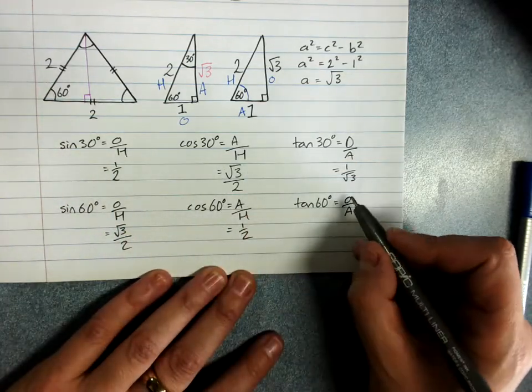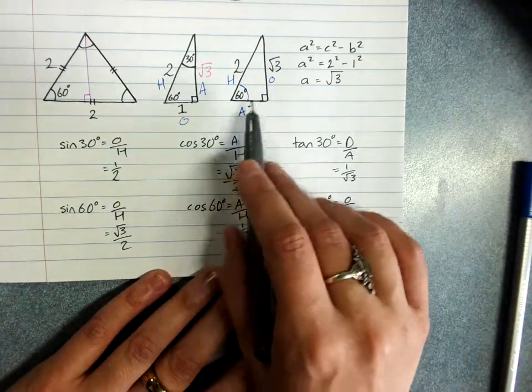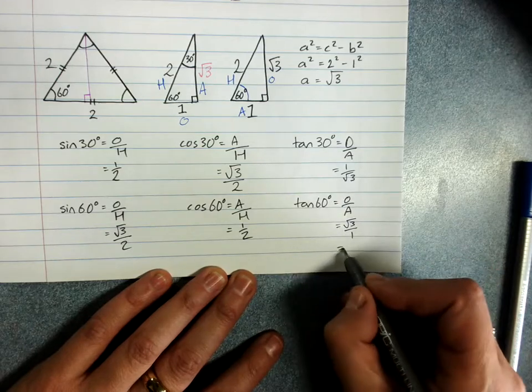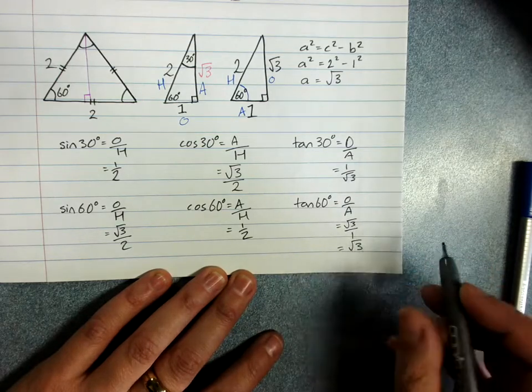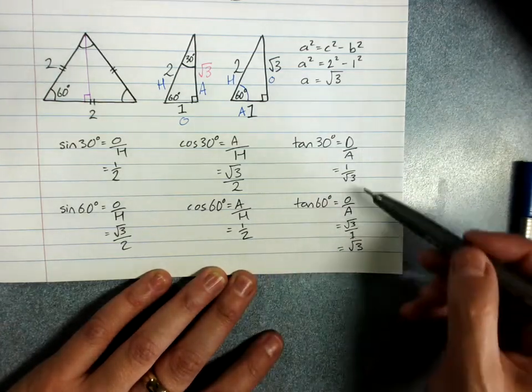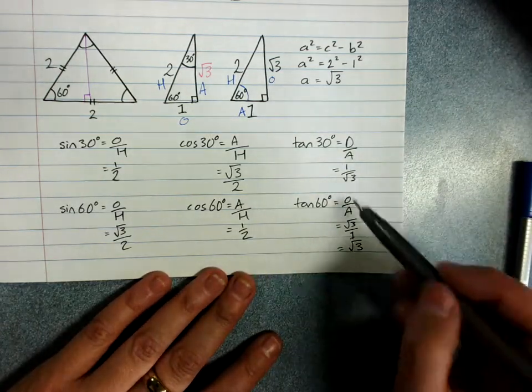And tan, opposite over adjacent, we have root 3 over 1, which is root 3. I hope you can read that that's part of that one there. And again, look, we've got the reciprocal. Interesting.